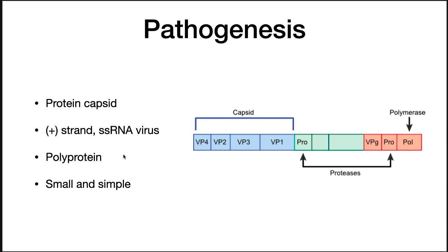Pathogenesis. Rhinoviruses are very simple viruses. They contain a protein capsid that surrounds a positive single-stranded RNA. When the RNA is translated by the virus, it makes a polyprotein, and this is degraded by proteases encoded directly in the protein into capsid proteins and the polymerase. So it's a very small and simple virus.